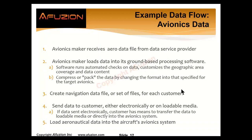An avionics maker receives aero data from some data service provider. That avionics maker loads that data into its ground-based processing software. The software runs automated checks on the data, probably customizes the geographic data area and content. Then it compresses or packages that data by changing the format into that specified for the target flight management system or terrain avoidance system. We create a navigation data file for each customer, then transmit or send that data to the customer.